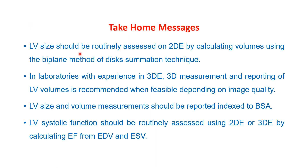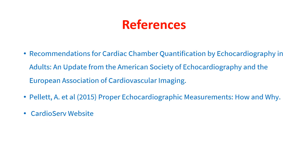Take-home messages: LV size should be routinely assessed on 2D echo by calculating volumes using the biplane Simpson method. In labs with 3D echo expertise, 3D measurement and reporting of LV volumes is recommended when feasible, depending on baseline 2D image quality. LV size measurements should be reported indexed to body surface area. LV systolic function should be routinely assessed using 2D or 3D echo by calculating the ejection fraction from the end-diastolic and end-systolic volumes.